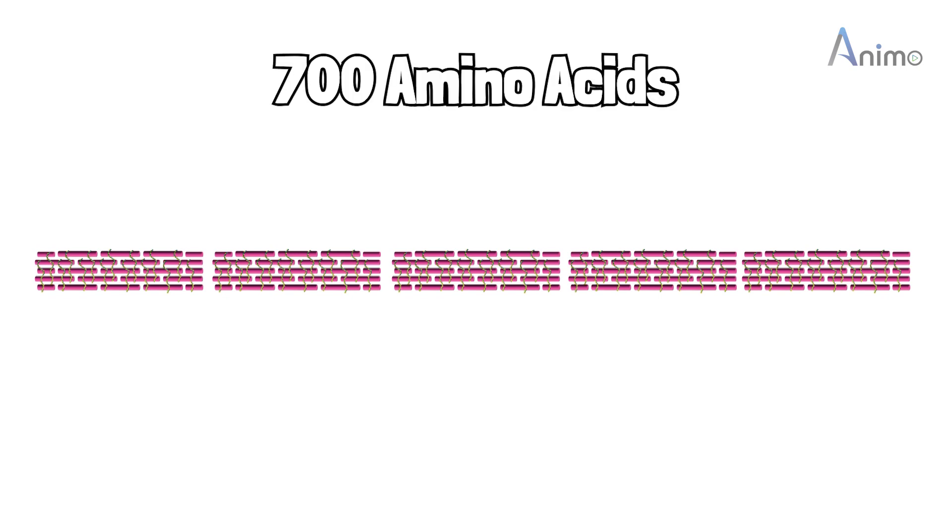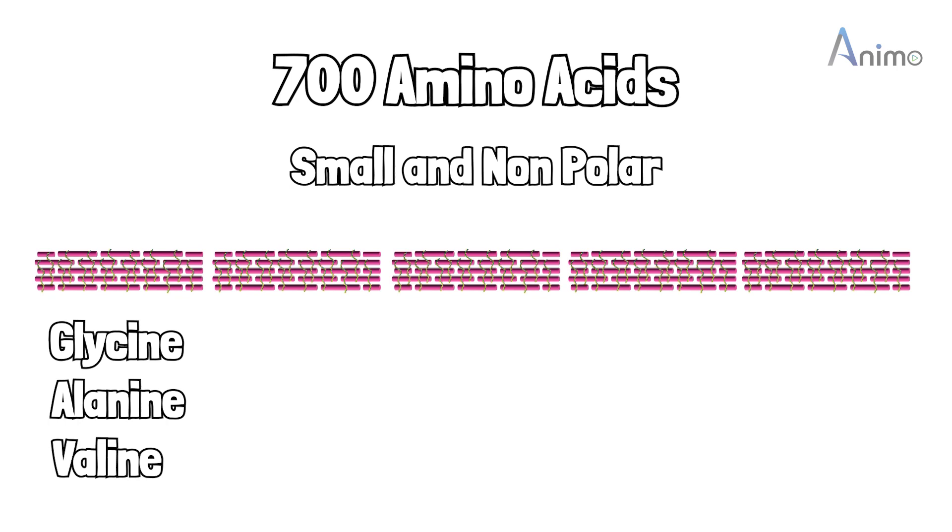This chain has approximately 700 amino acids. And most of the amino acids are small and nonpolar. For example, glycine, alanine and valine.